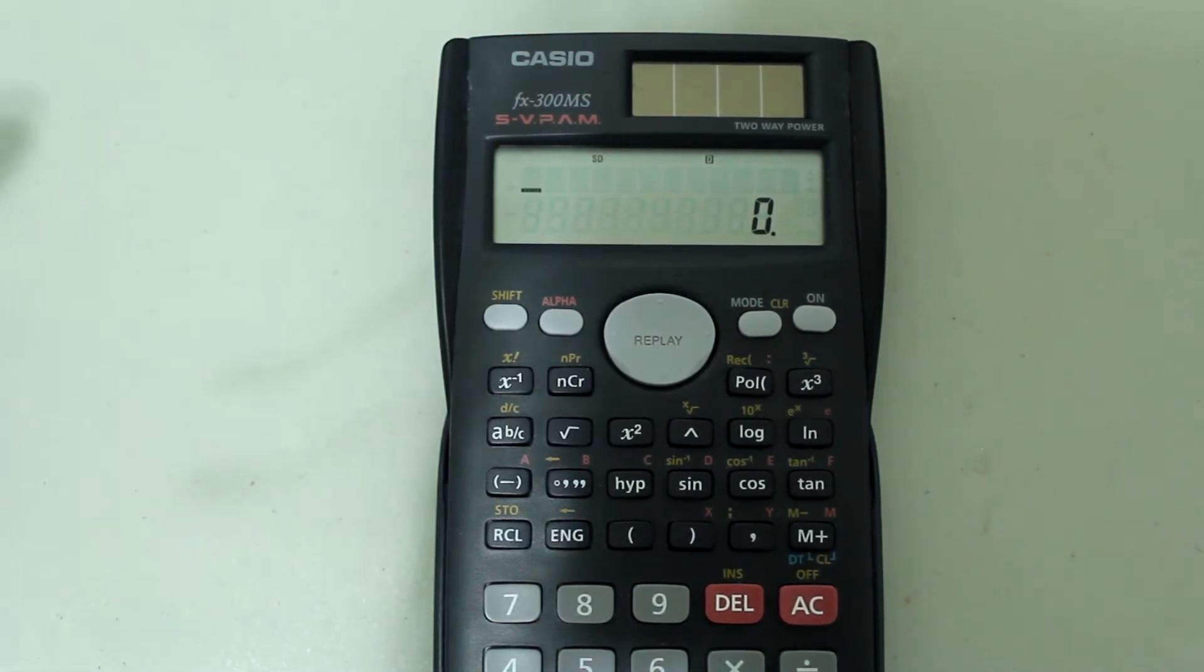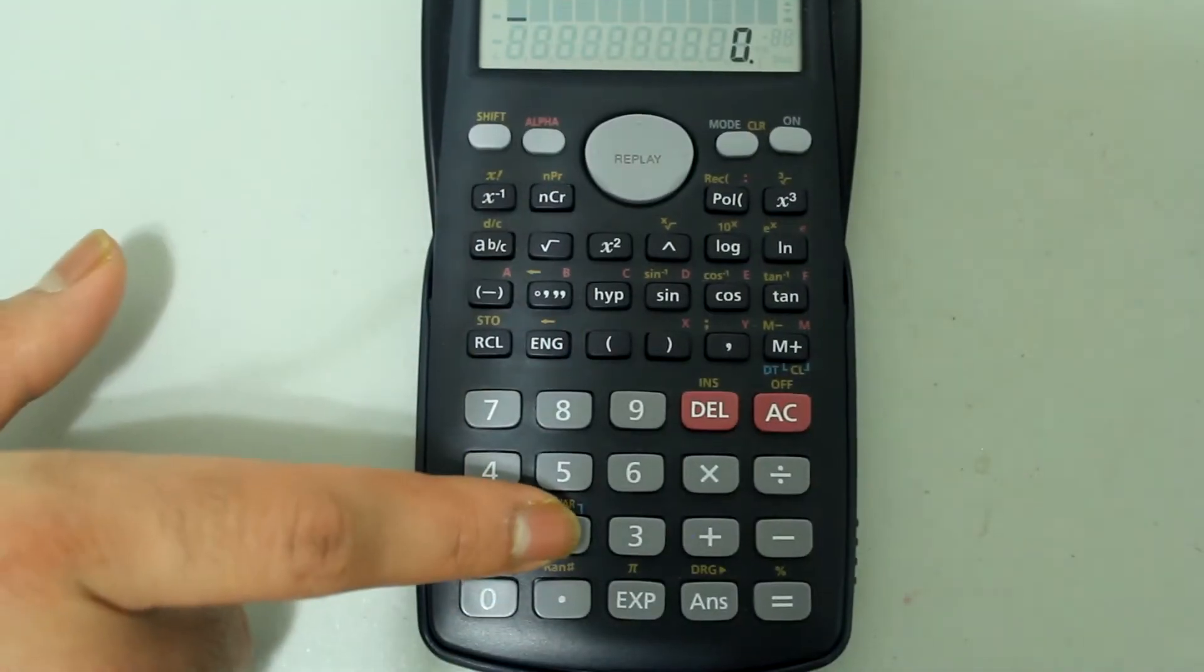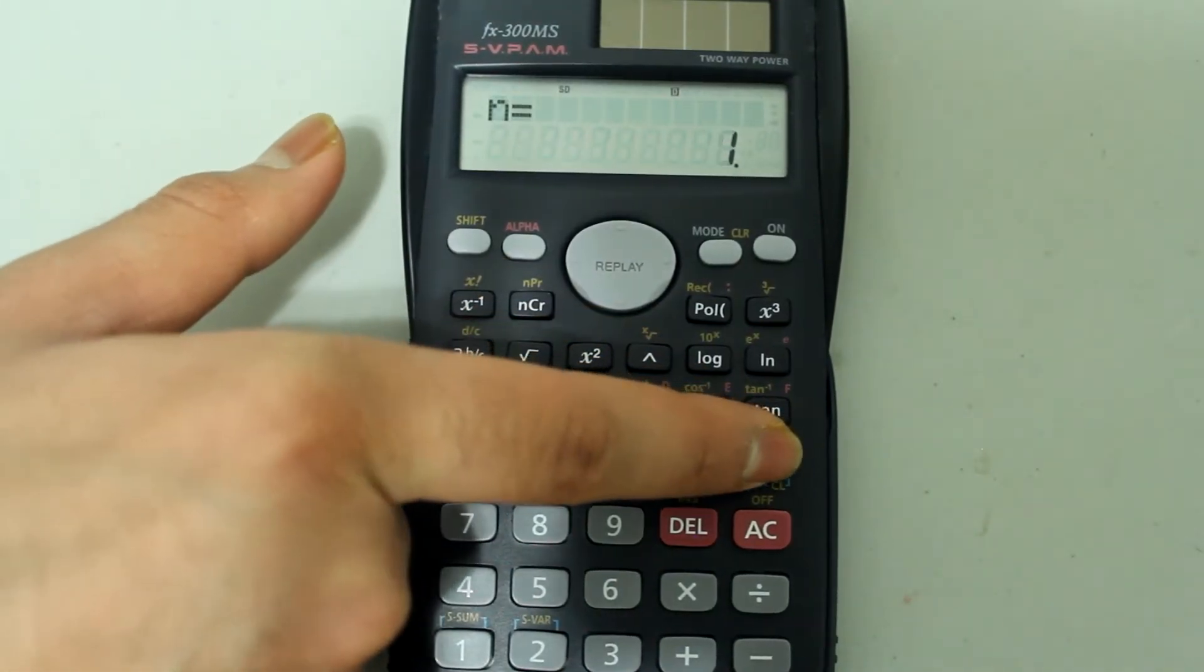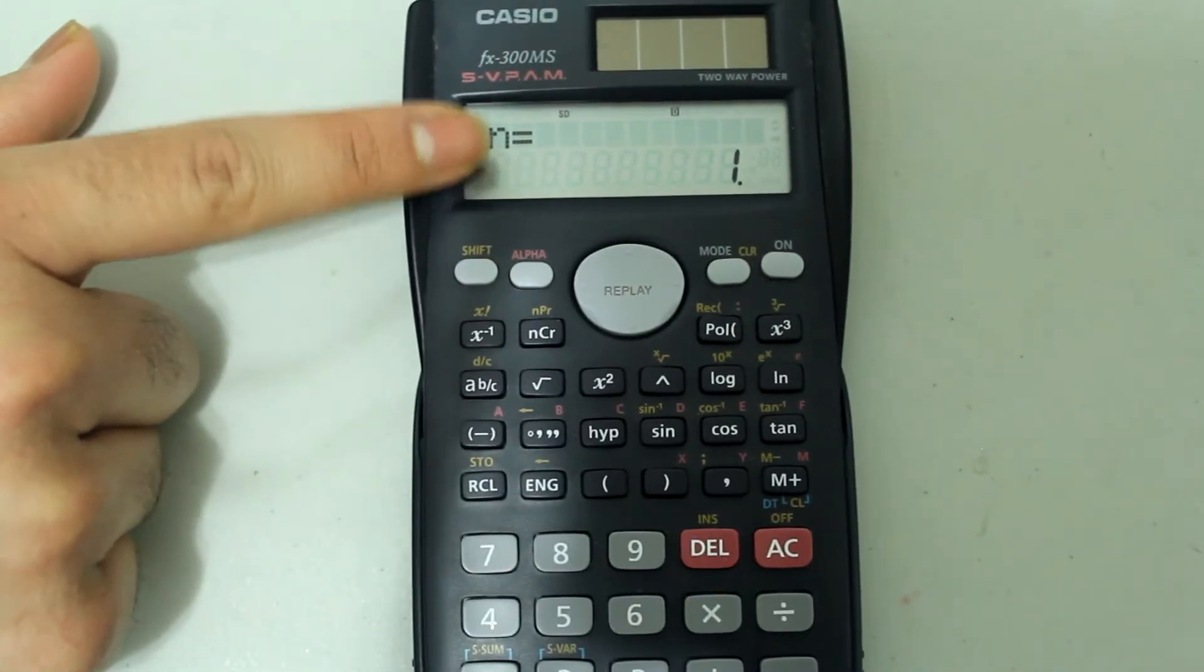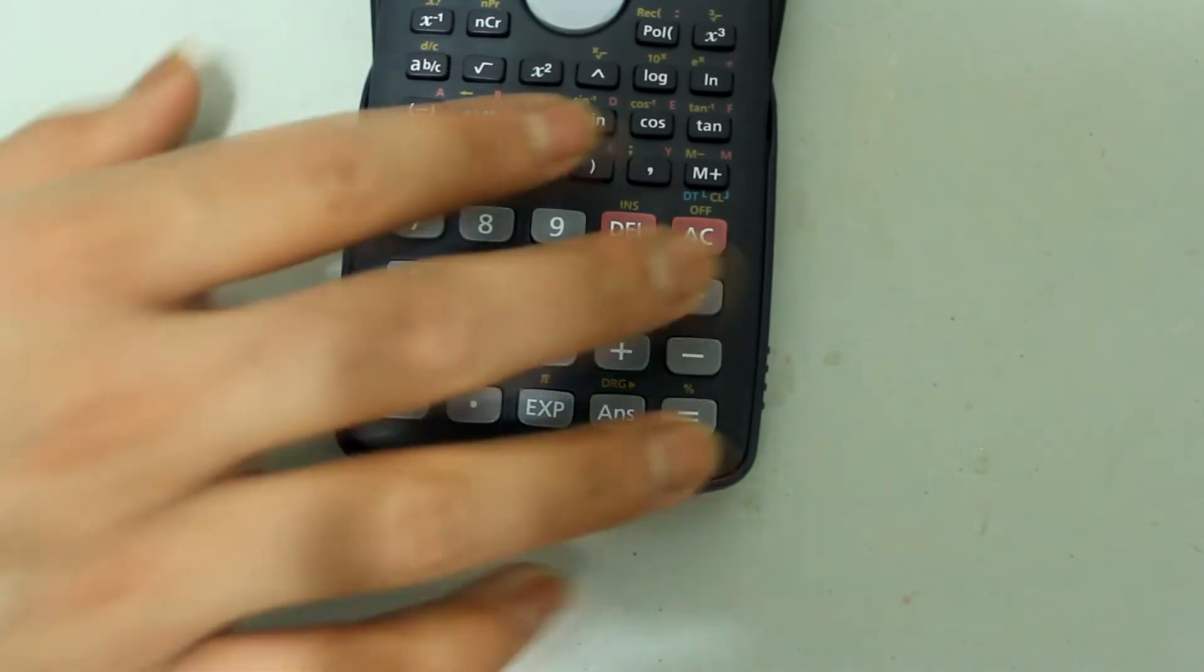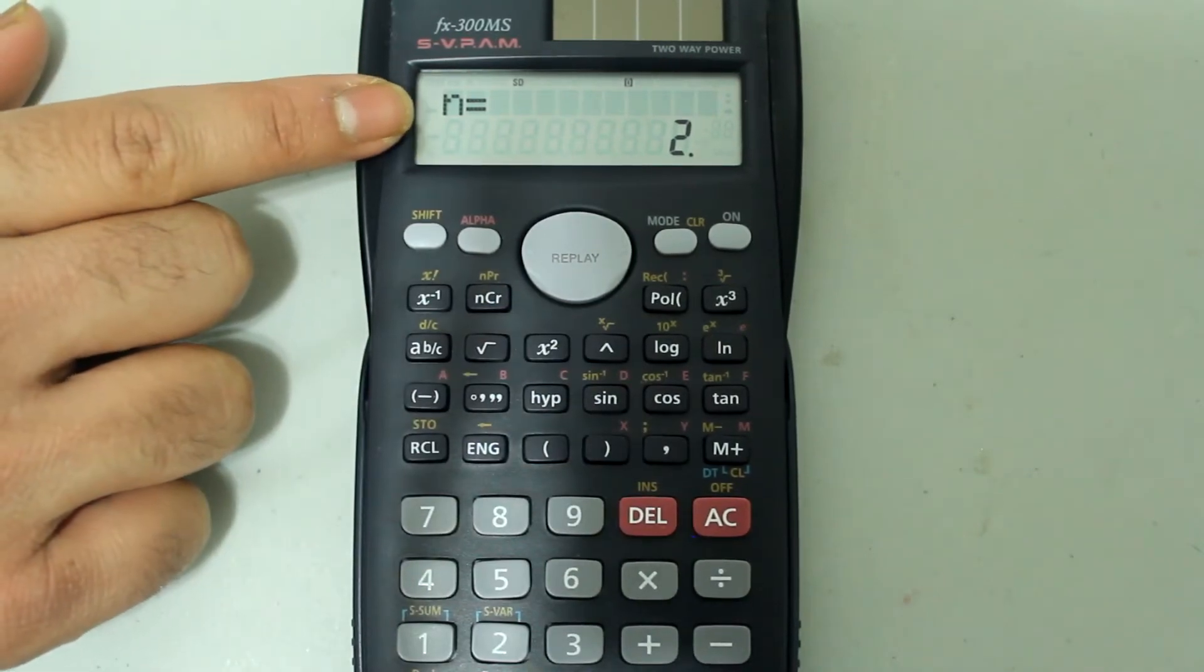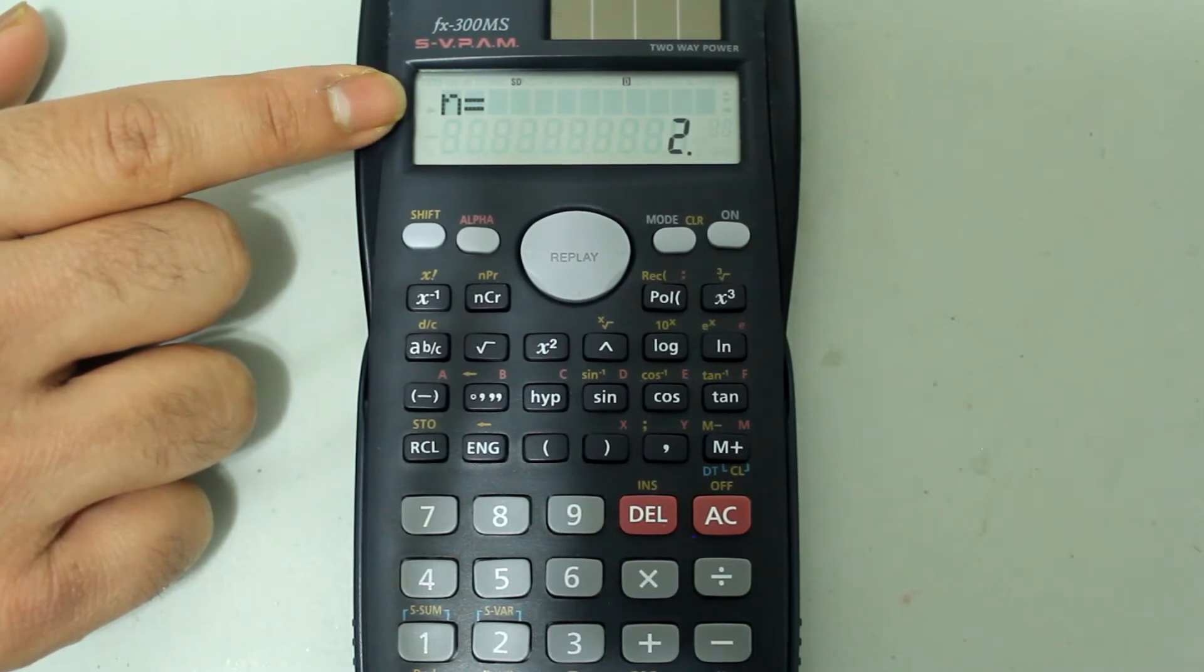In order to enter the numbers you will type the first number in your set, which is 2, and then press the M plus button and this pops up. N equals 1, that's telling you that 2 is the first entry in the set. Next press 5, which is the next number in the set, and press the M plus button one more time and this pops up. N equals 2, it's letting you know that 5 is the next entry in the set.